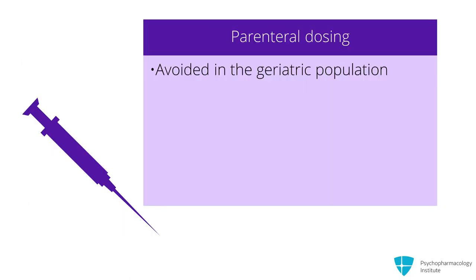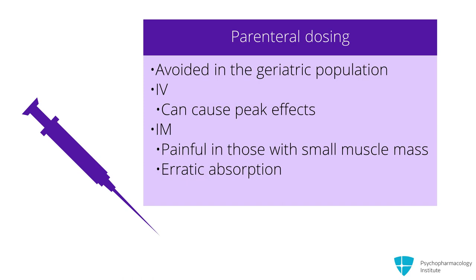As an aside, in general, parenteral dosing is avoided in the geriatric population. IV dosing can cause peak effects like low blood pressure to occur so rapidly that the frail patient is at risk of things like stroke. IM dosing can be painful in those with small muscle mass, and absorption of drug is erratic in that population.